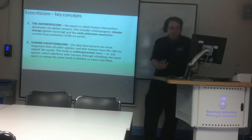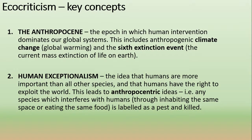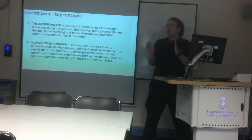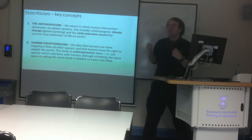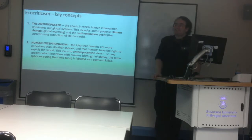When we talk about the Anthropocene we're talking about all the terrible things happening right now: the environmental catastrophe, global warming and climate change, and also the sixth great extinction event. The current rate of species extinction can only be compared to the most extreme extinction periods in the past, like when the dinosaurs went extinct.